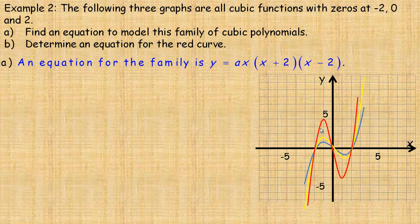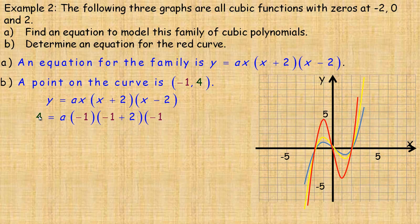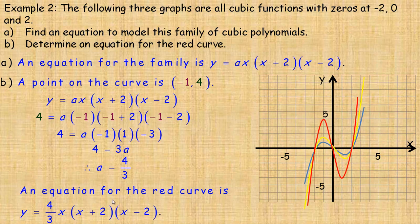To find the specific equation for the red curve, we identify a point on it — the point negative 1 comma 4. We substitute 4 in place of y and negative 1 in place of x in all three positions. Negative 1 plus 2 is 1, and negative 1 minus 2 is negative 3. Multiplying negative 3 by negative 1 by 1 gives 3, so 4 equals 3a. Dividing both sides by 3 gives a equals 4 thirds. The equation for the red curve is y equals 4 thirds times x times (x plus 2) times (x minus 2).